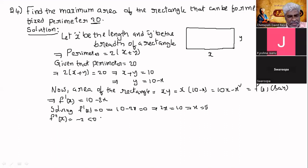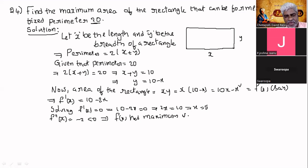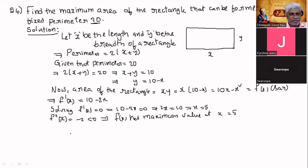Since the second order derivative is negative, that implies f of x has a maximum value. f of x has a maximum value at x equal to 5. Therefore, the maximum area is f of 5.